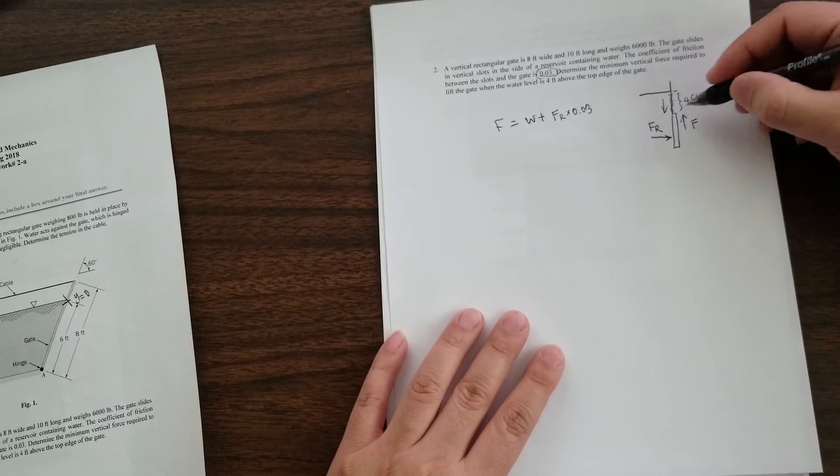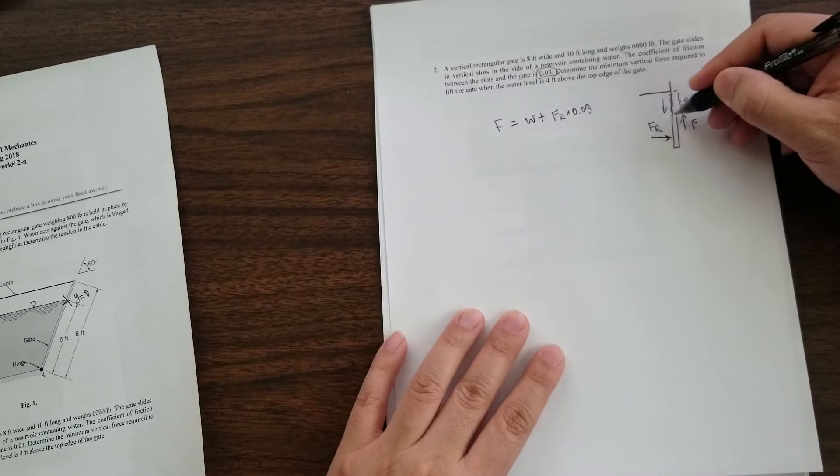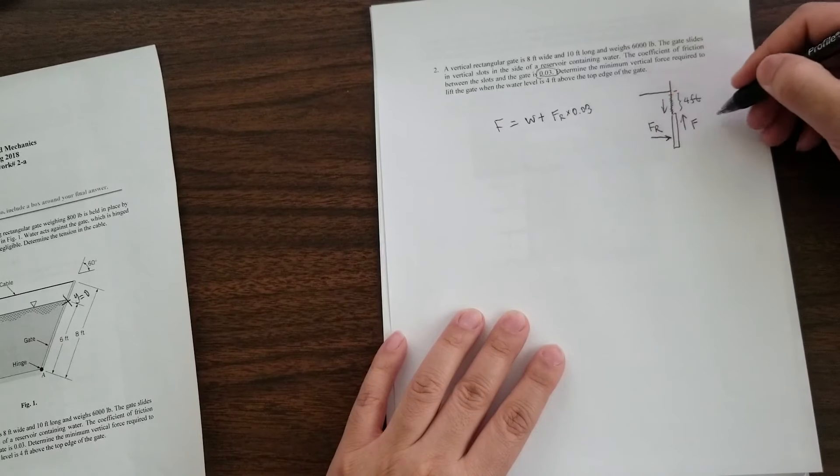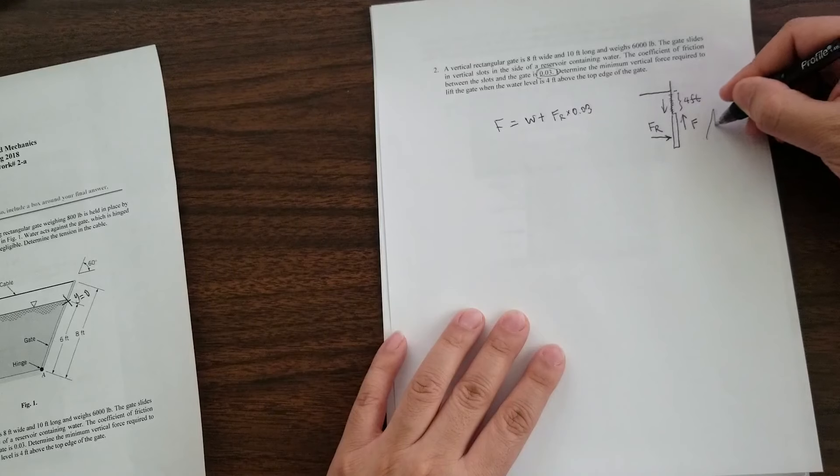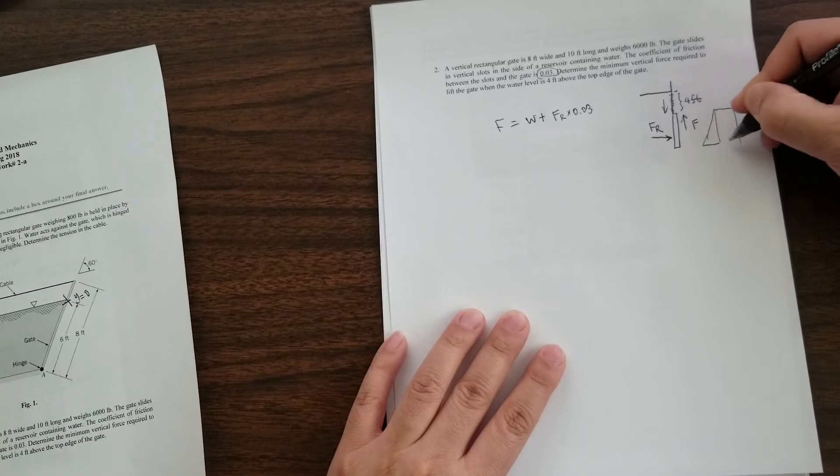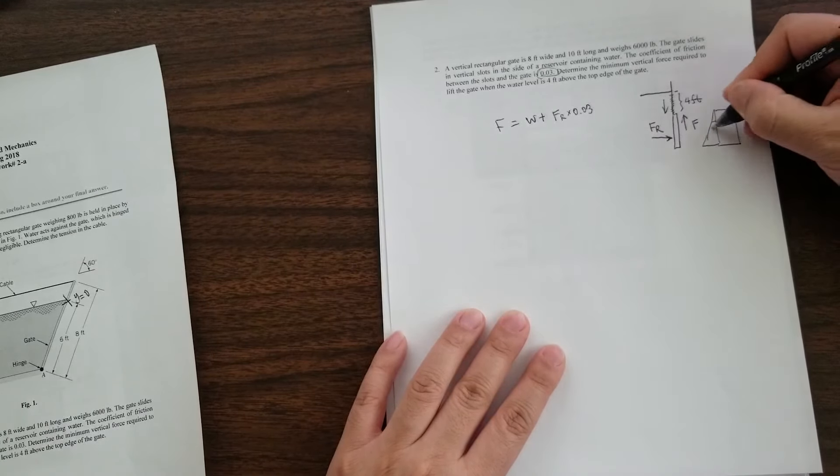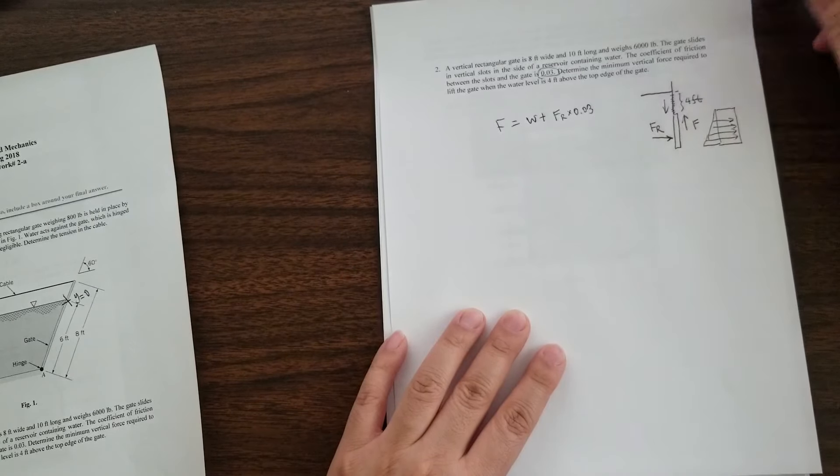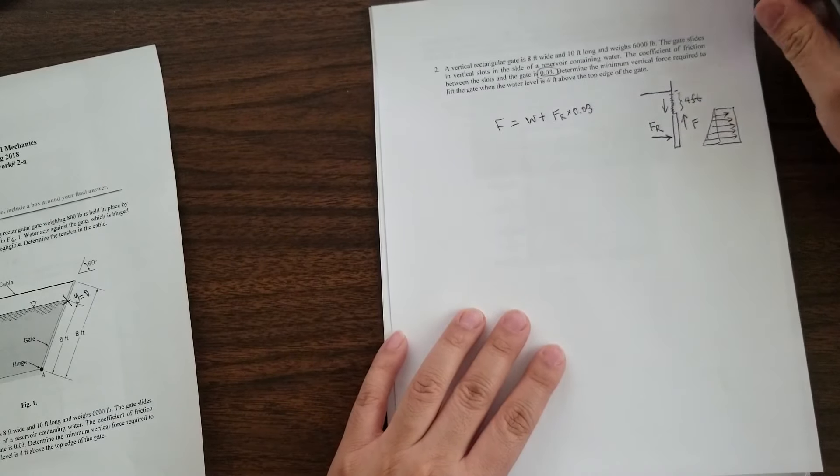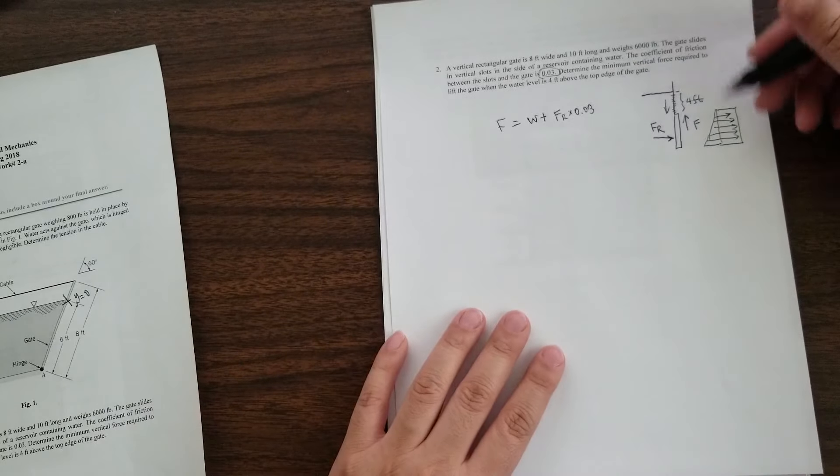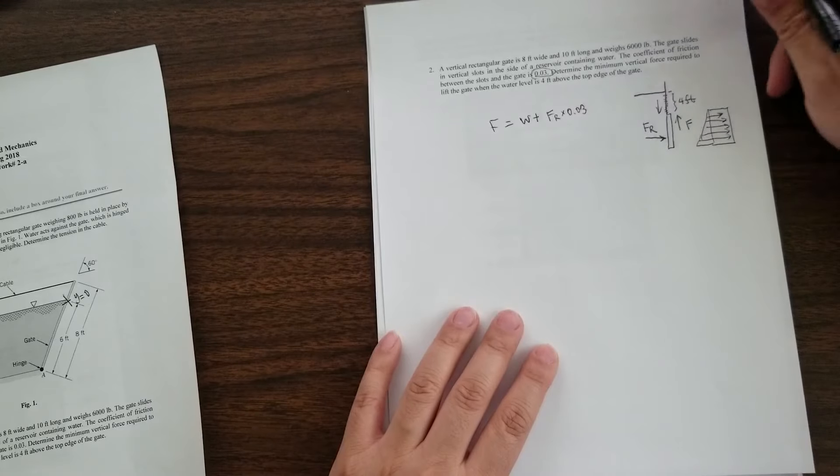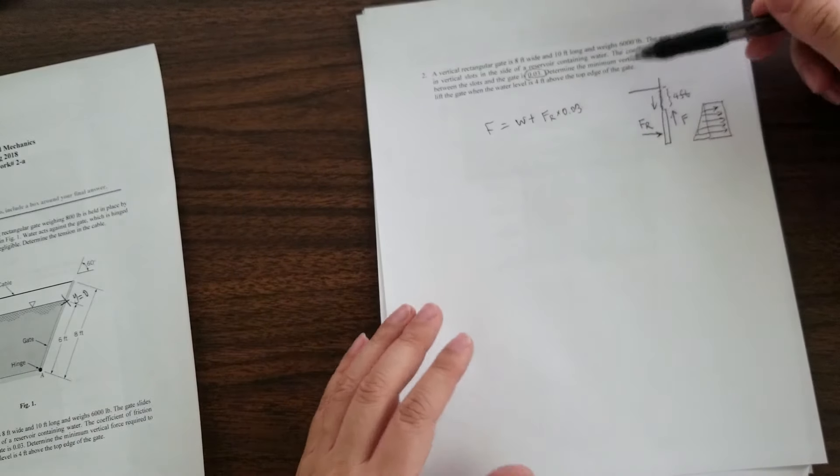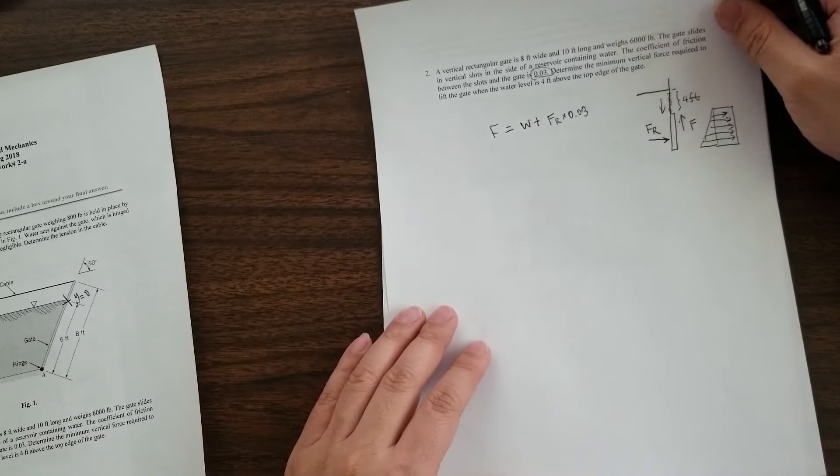You need to understand the other thing is that the pressure prism acting on the FR is not a triangle. It's a trapezoid. And you only need to consider its initial condition. That is when it's actually four feet deep. Of course, as you go up, this FR would actually decrease because once you go up, the friction would reduce, but we only ask the initial condition.